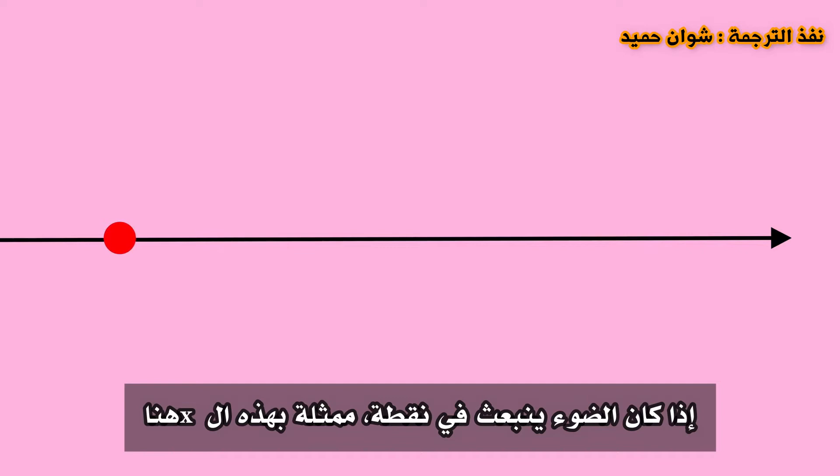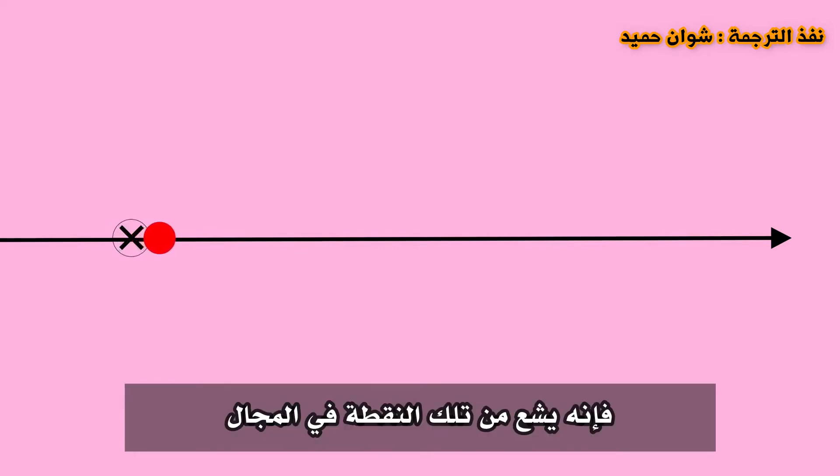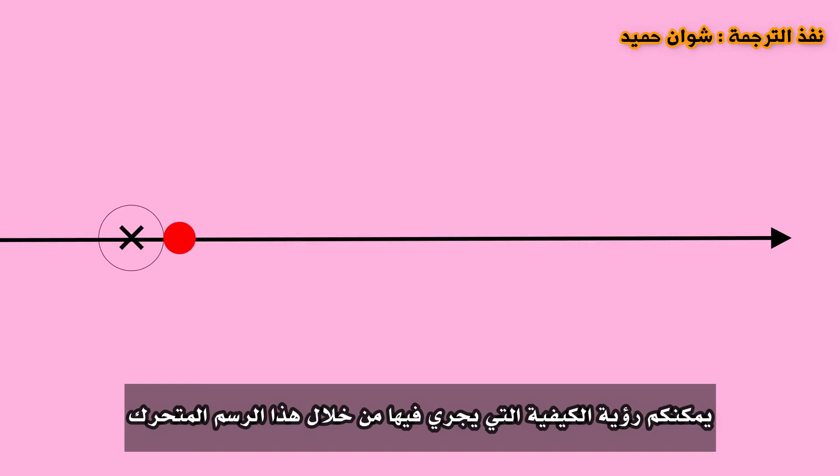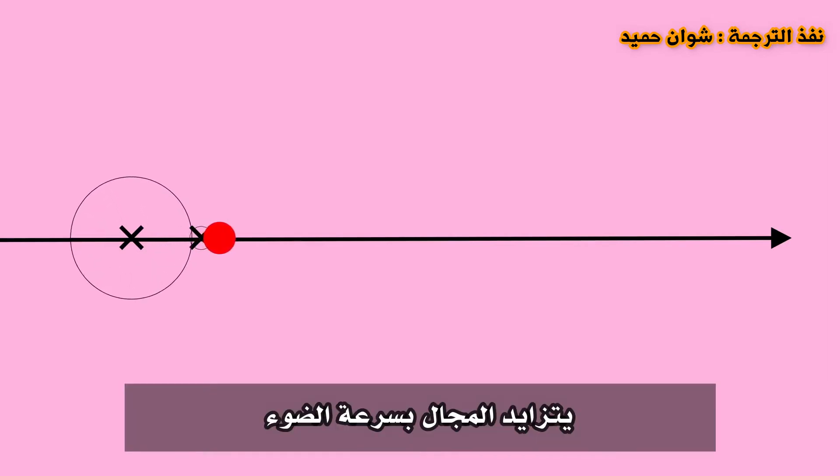If light is emitted at a point represented by this x here, it radiates from that point in a sphere. You can see how it works in this animation. The sphere grows at the speed of light.